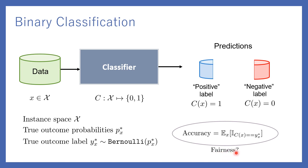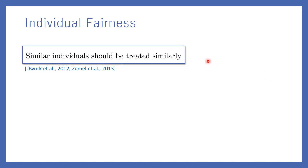But what about fairness? There has been a growing concern about whether accuracy is the only metric that should be used to assess the performance of a classifier. Various notions of fairness have been defined. In this work we mainly focus on individual fairness, where the idea is to treat similar individuals similarly. For example, if two instances x and x' are similar, their corresponding predictions c(x) and c(x') should also be similar.